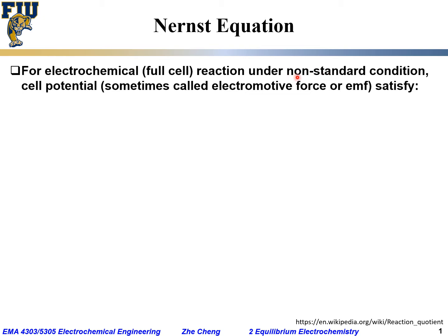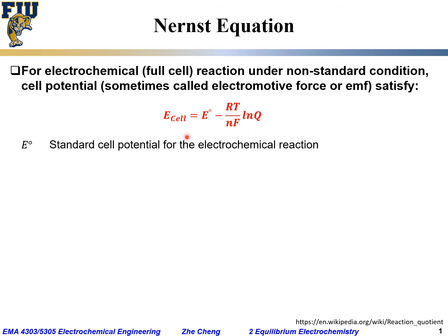For electrochemical reactions under non-standard conditions, the equilibrium cell potential would satisfy the Nernst equation. E_cell is the equilibrium cell potential for this non-standard condition, while E° is the standard cell potential for the electrochemical reaction. You get the standard cell potential using the method mentioned before, from standard electrode potential versus SHE.